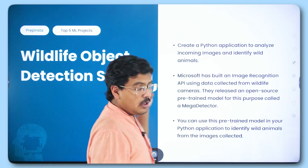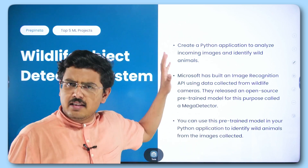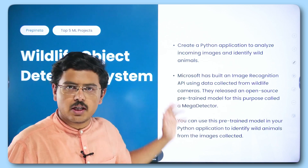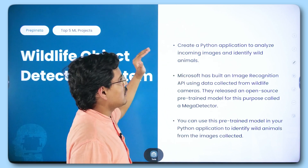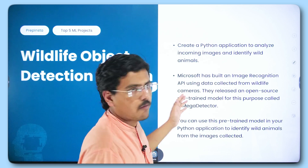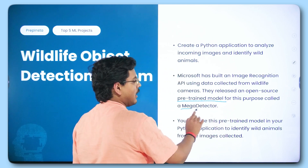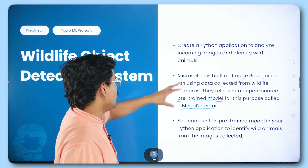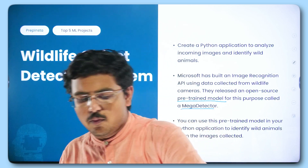This project has been discussed in various interviews and a lot of people who have been selected in good profiles have made this. It is a very easy to make project but very useful — you can actually get a hang of ML. It is a basic project but gives the interviewer an idea that you have worked hard. You have to create a Python application to analyze incoming images and identify wild animals. Microsoft has already built an image recognition API using data collected from wildlife cameras — you can use that dataset. They have released an open source pre-trained model for this purpose called MegaDetector.